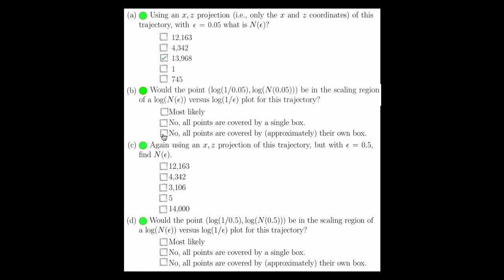All points are covered by approximately their own box. If you look at the length of this time series, or the length of this trajectory, it's 14,000 points long. The fact that there's 13,998 boxes means that basically every point has its own box. Most likely this point would be on the top flat curve, not in the scaling region.